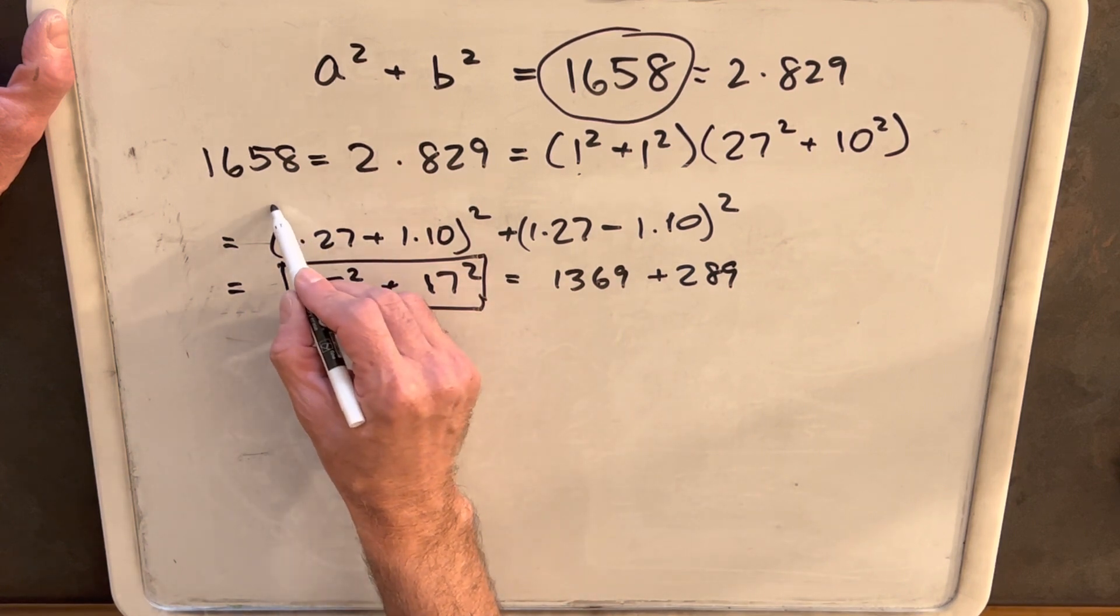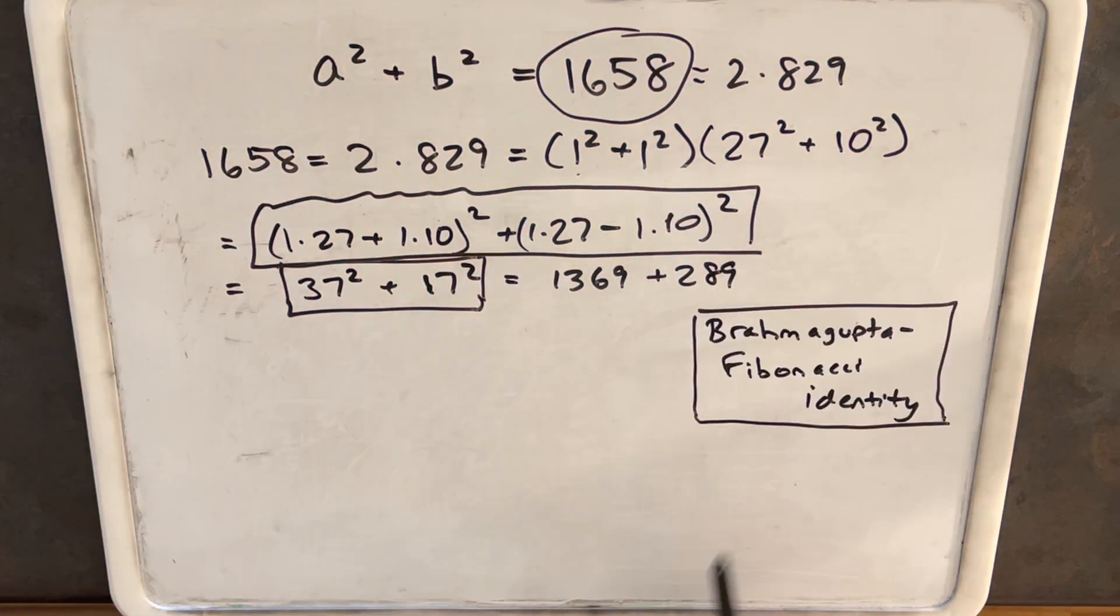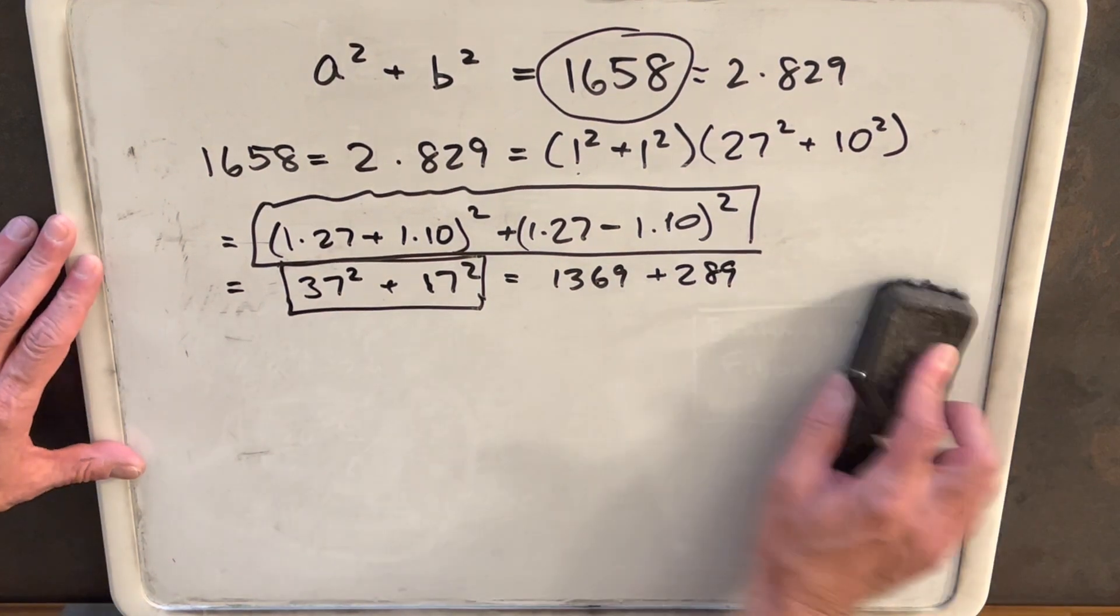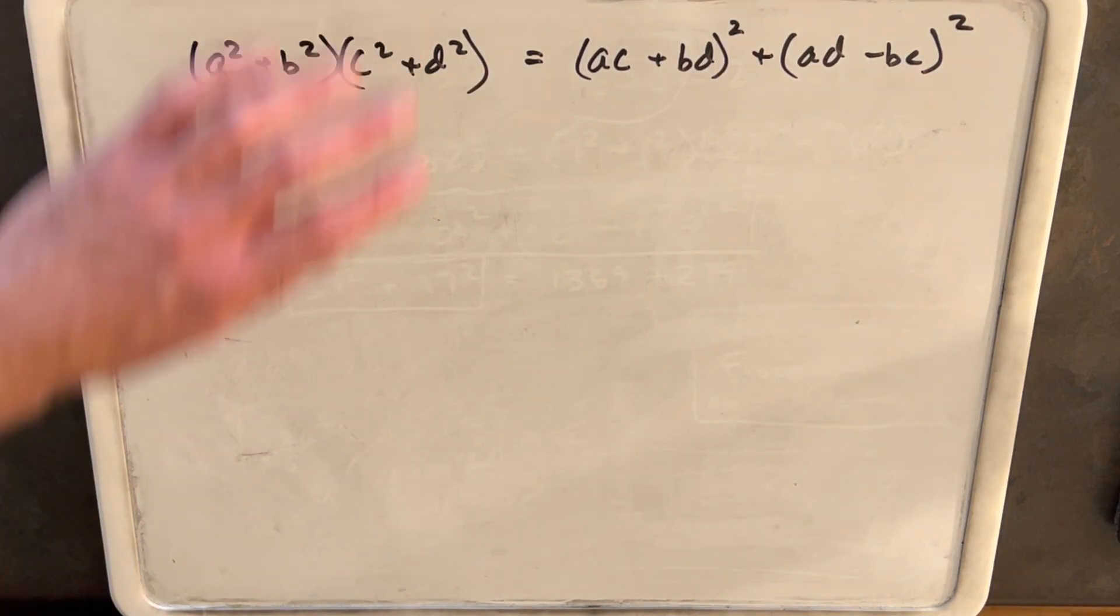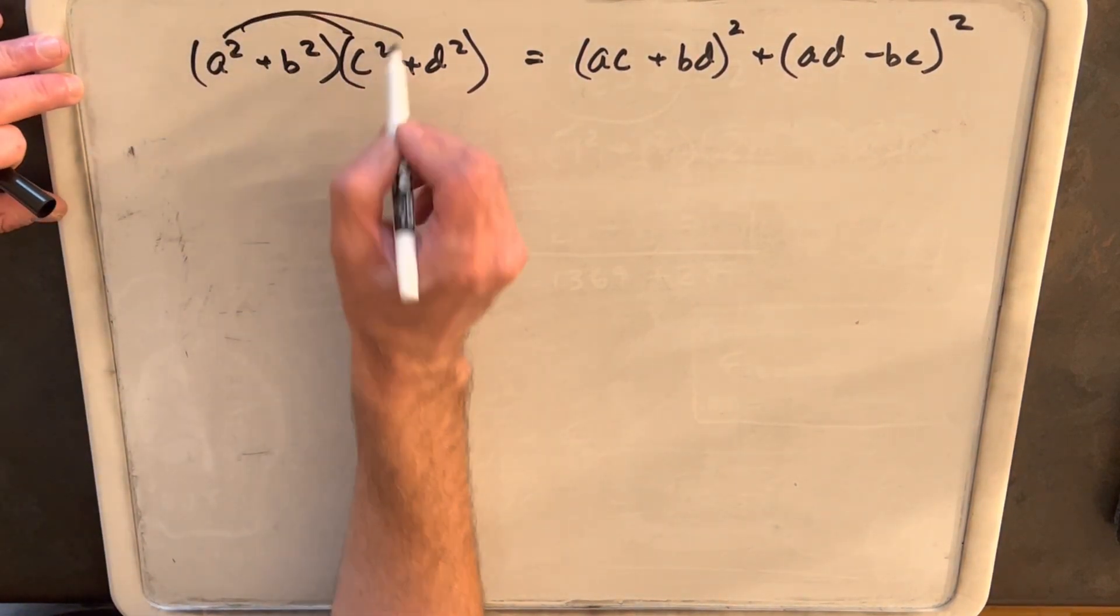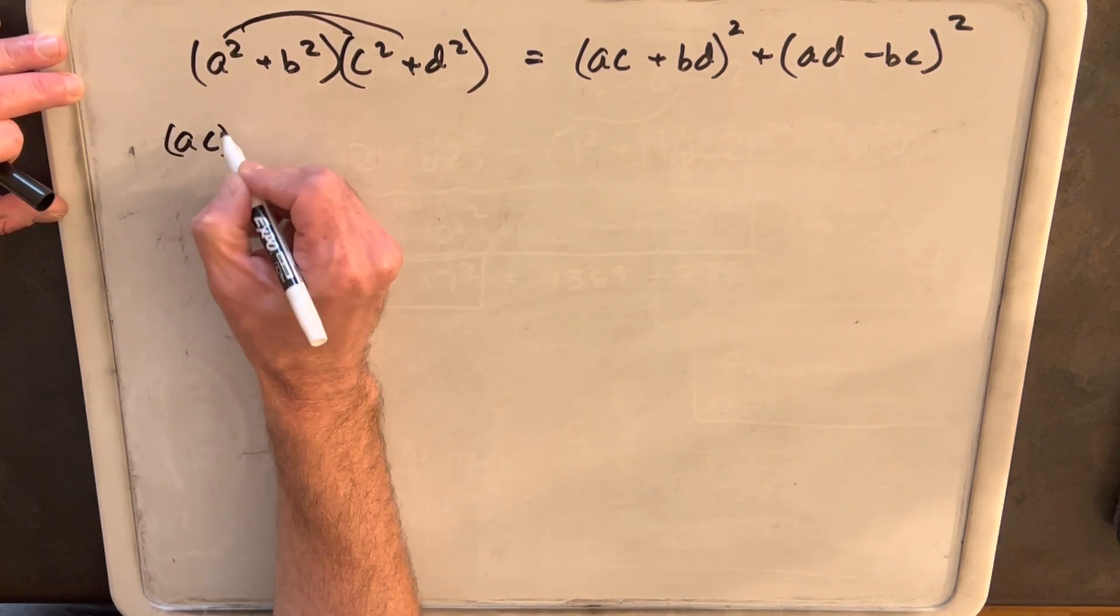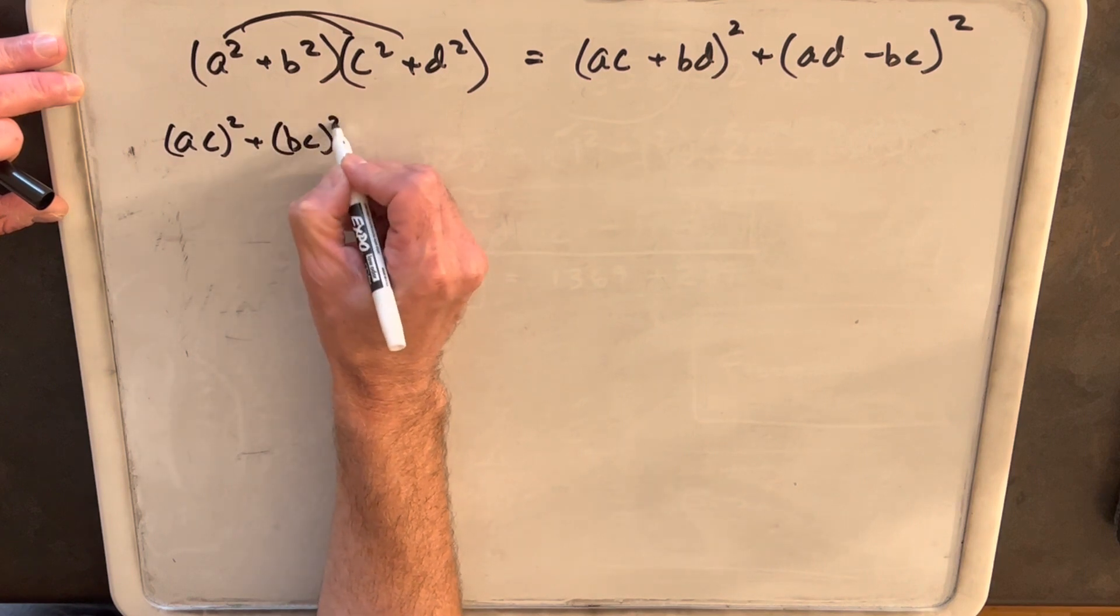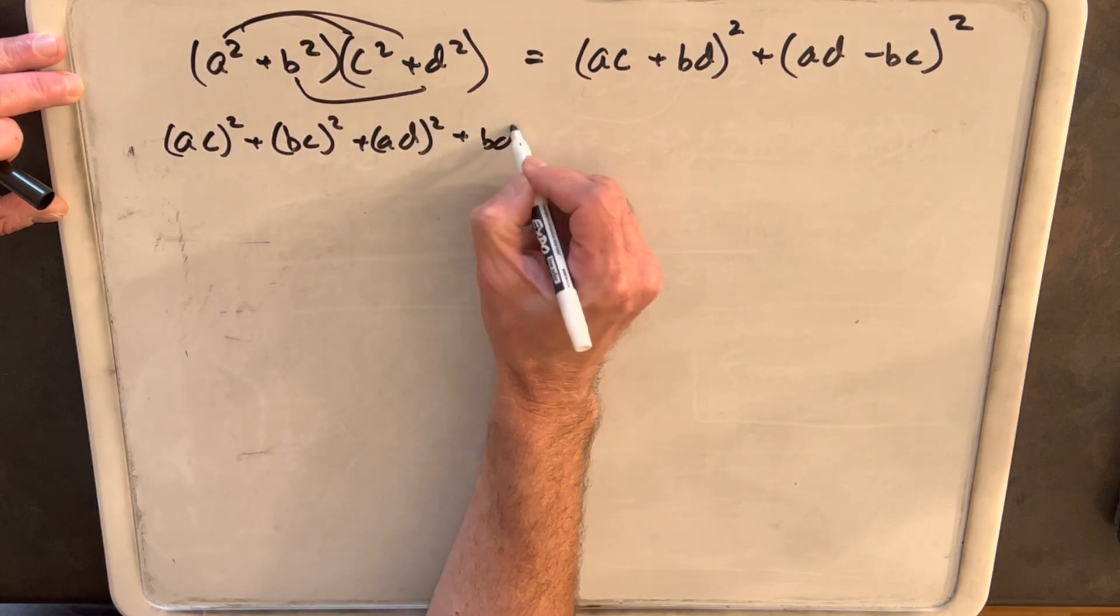I think we need more explanation for this. If you're not familiar with this, we need to explain this piece right here. It's called the Brahmagupta-Fibonacci identity. Let me just clean up the board and we'll show why this works. Showing that this works is going to be really easy because all you really need to do is distribute on both sides and you'll see that we have the same thing. So we'll just do our distribution here and we're going to have ac², bc², ad², and bd².